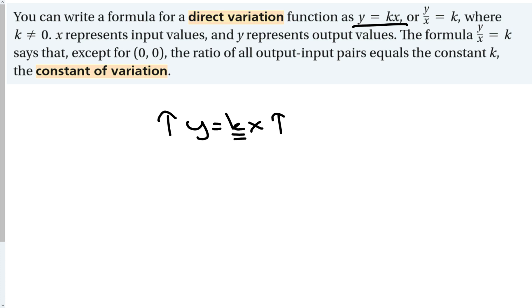We can take this equation and divide both sides by x to get a formula for k. Where, as long as k doesn't equal zero, x represents input values, y represents output values. The formula y over x equals k says that the ratio of all output-input pairs equals a constant. We call that constant k, the constant of variation.